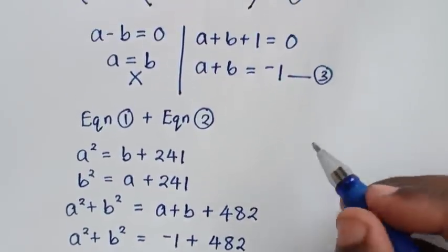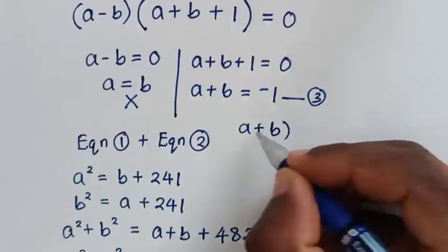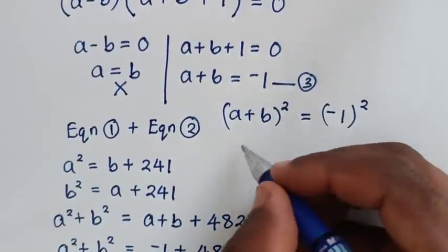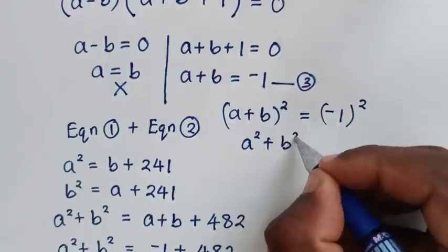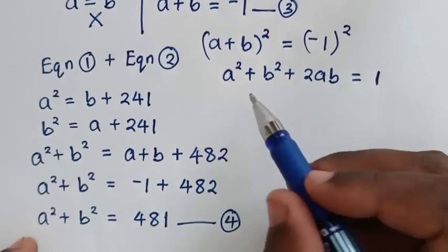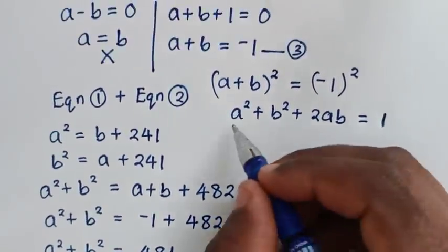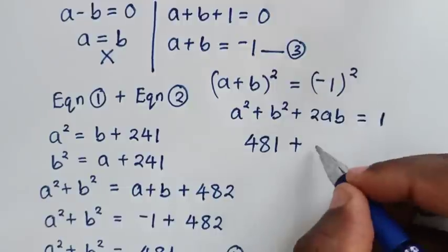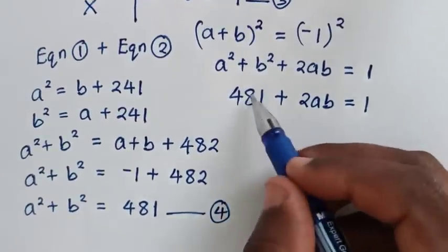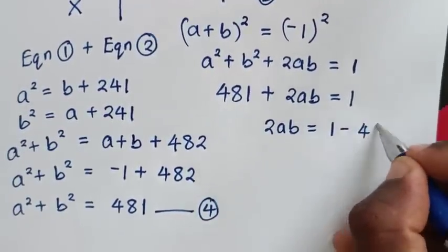In the next step, we go back to equation 3 and square both sides. Squaring a plus b gives a squared plus b squared plus 2ab, equal to negative 1 squared, which is 1. Now a squared plus b squared is from equation 4, which equals 481. Substituting: 481 plus 2ab equals 1. Taking 481 to the right side gives 2ab equals 1 minus 481.